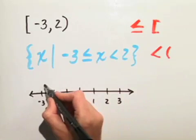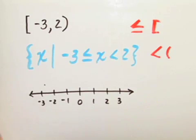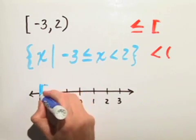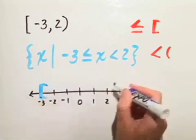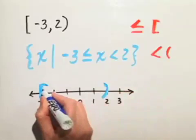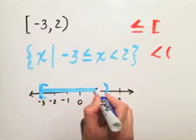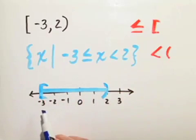So, at the negative 3, we will put a bracket. And at positive 2, we will put a parentheses, and we will include the numbers. So, there is our graph including negative 3.